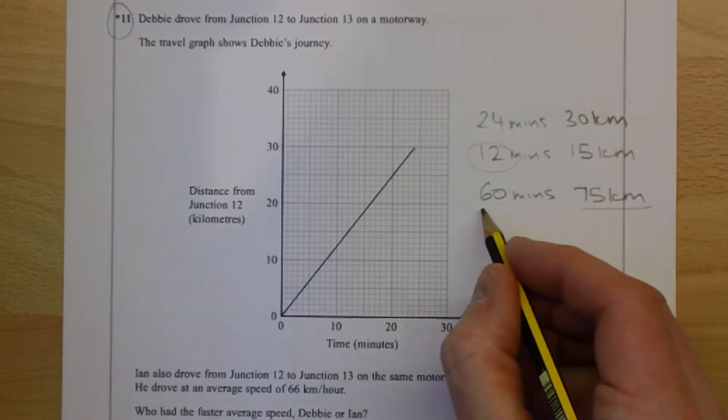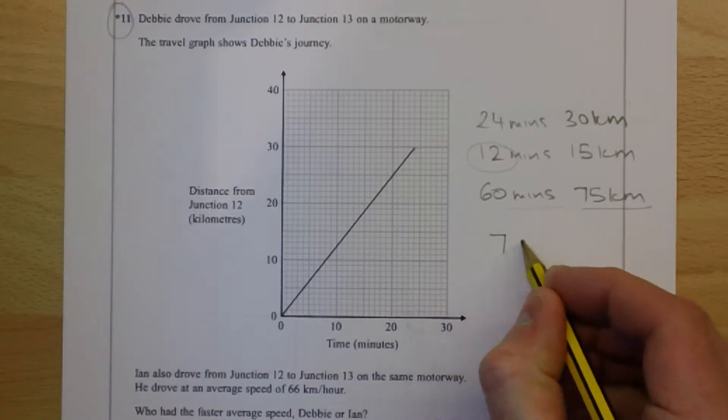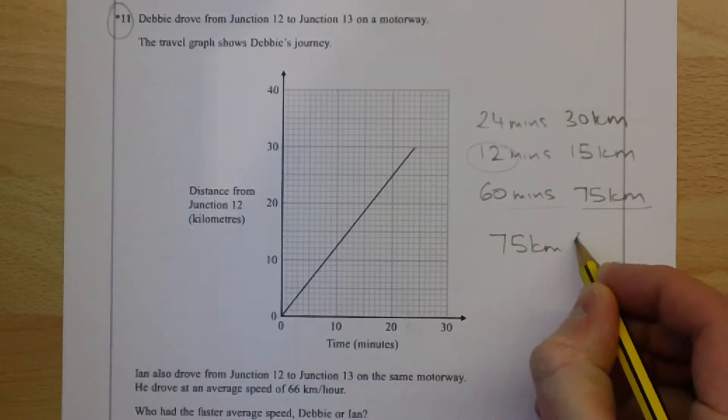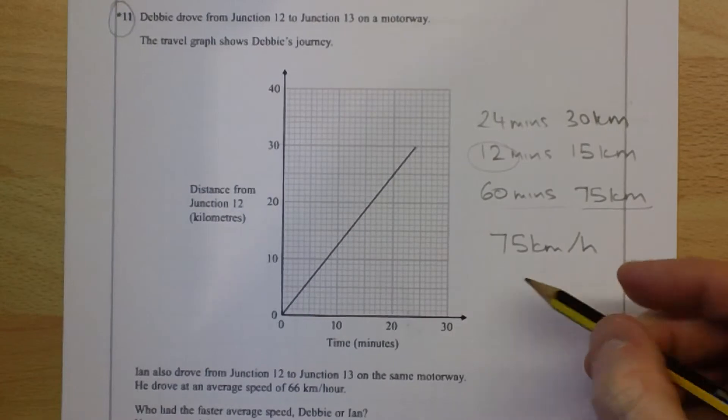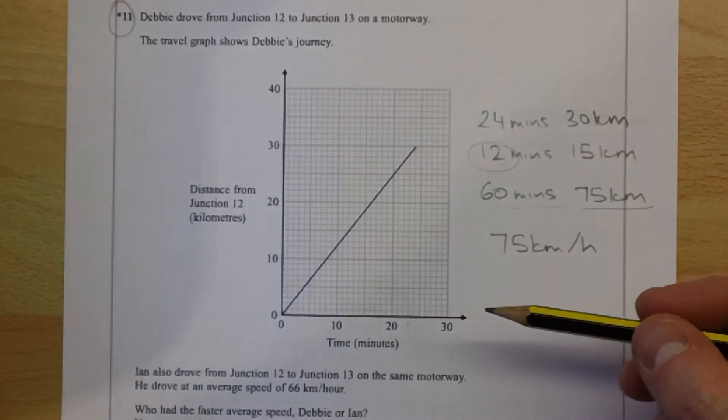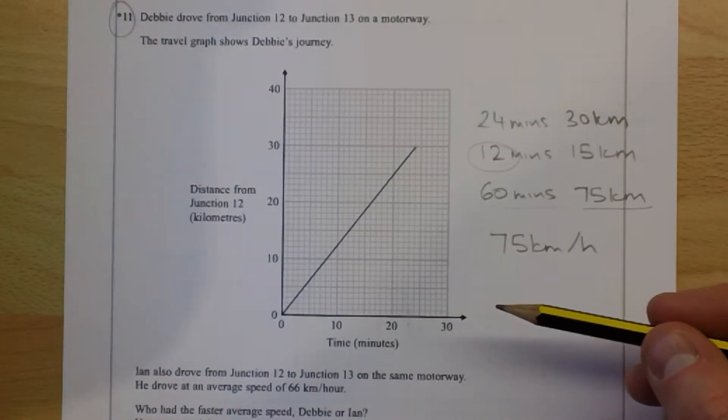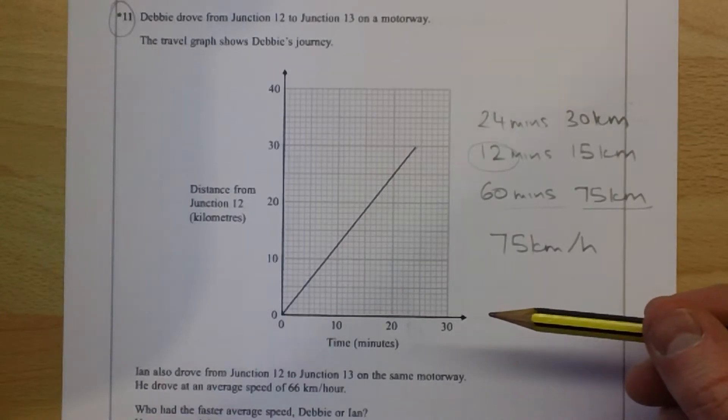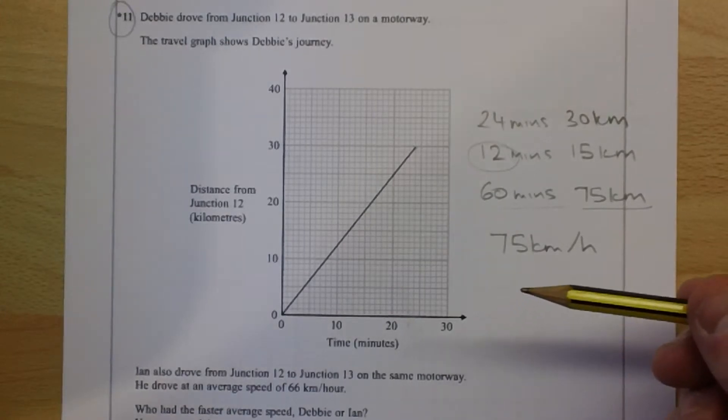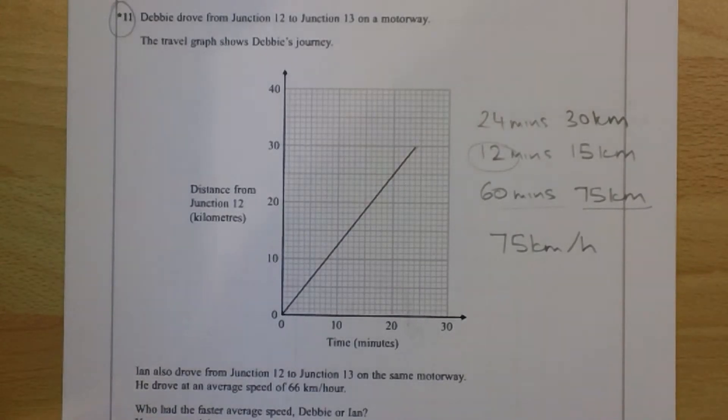So 75 kilometres in 60 minutes is 75 kilometres an hour. And then if this was the method you were choosing, you would have to finish with a statement which explained Debbie had the faster average speed. Her speed was 75 compared to 66.